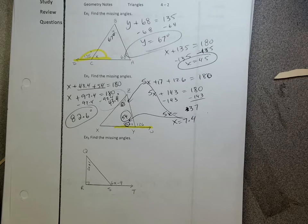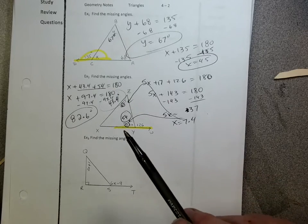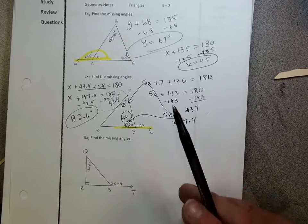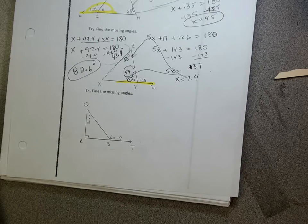All right, not too bad. So it really comes down to 180 degrees in a triangle, 180 degrees in a straight line, okay? All right, example three.